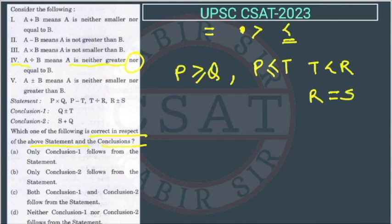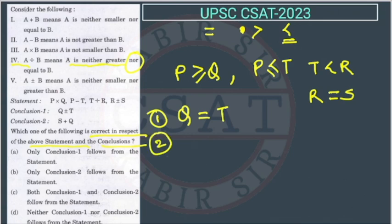Now for the conclusions: the first conclusion is Q plus-minus T — 'plus-minus' means neither smaller nor greater, so this says Q is equal to T. The second conclusion is S plus-plus — 'plus-plus' means neither smaller nor equal, meaning S is greater than Q.